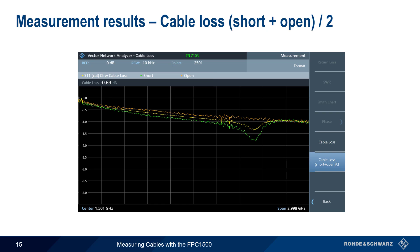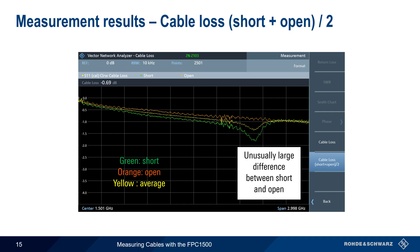When we measure using both short and open terminations, the result is three traces. Green is the measurement made with the short. Orange is the measurement made with the open. And yellow is the average of these two measurements. Here we see an unusually large difference between the open and short traces from about 2.5 to 2.7 GHz, which likely indicates a poor quality short. The result should be very similar if a high quality short is used.